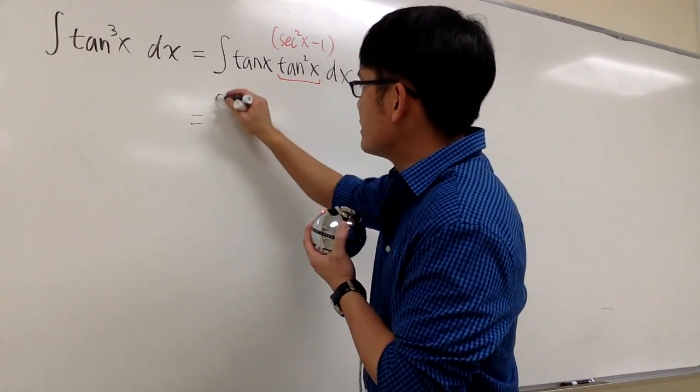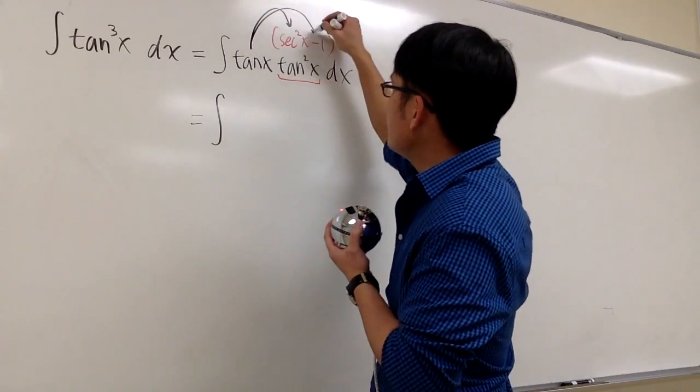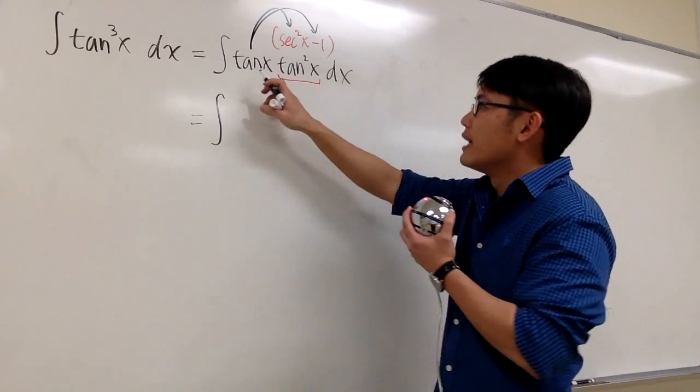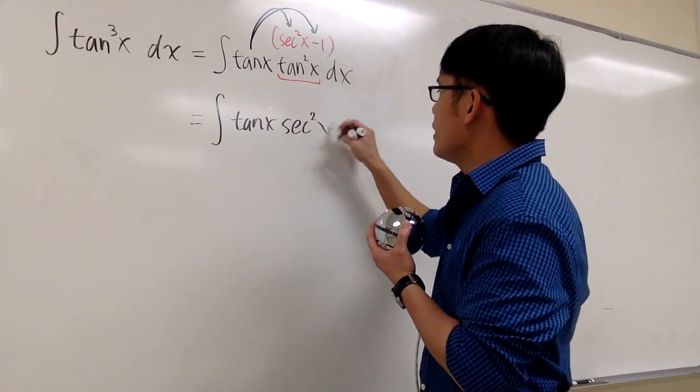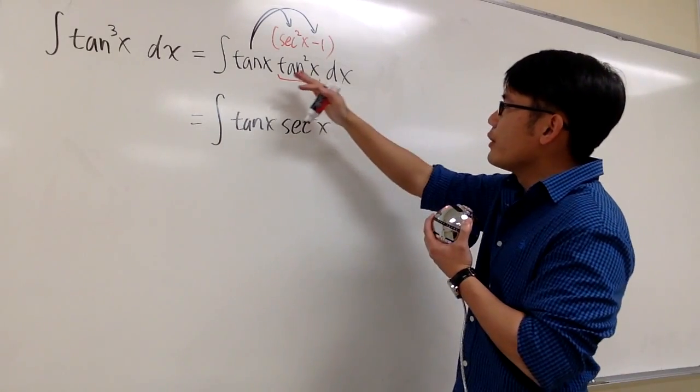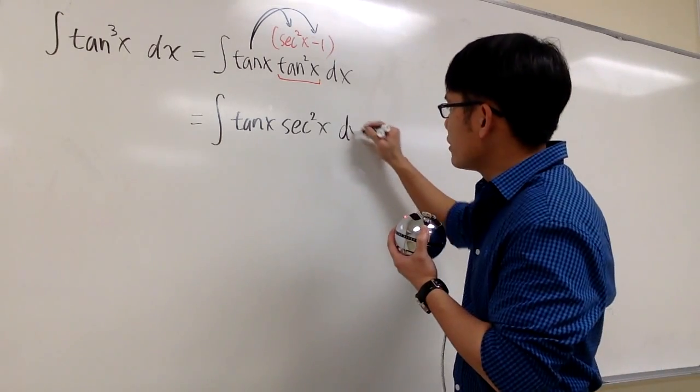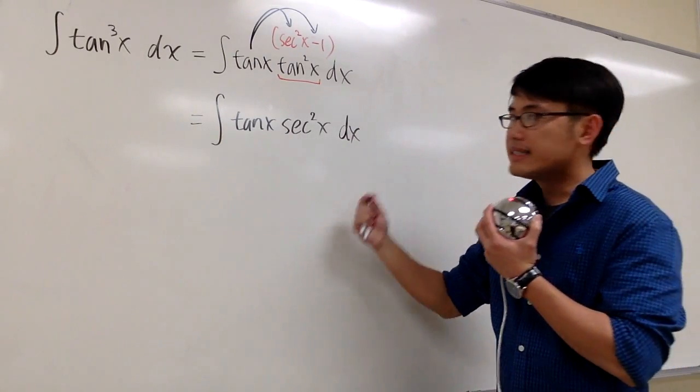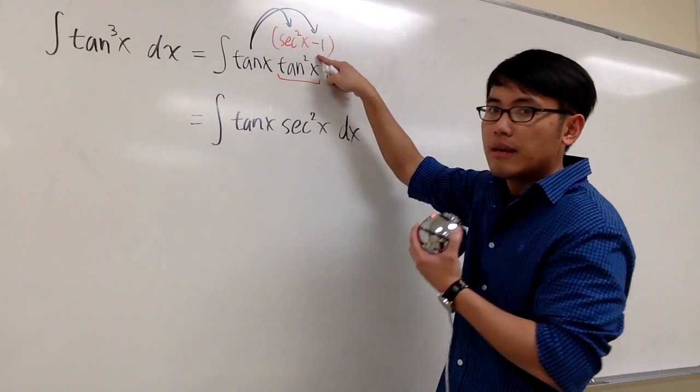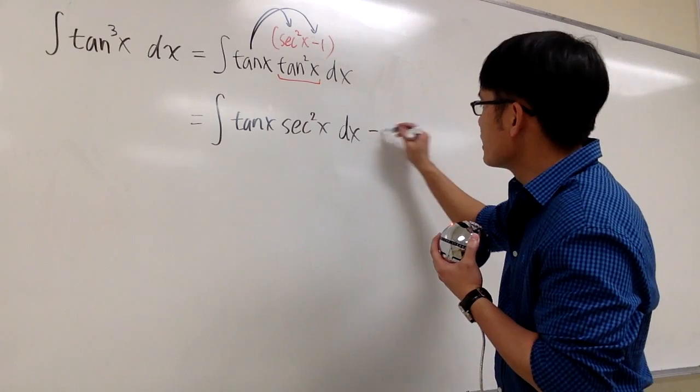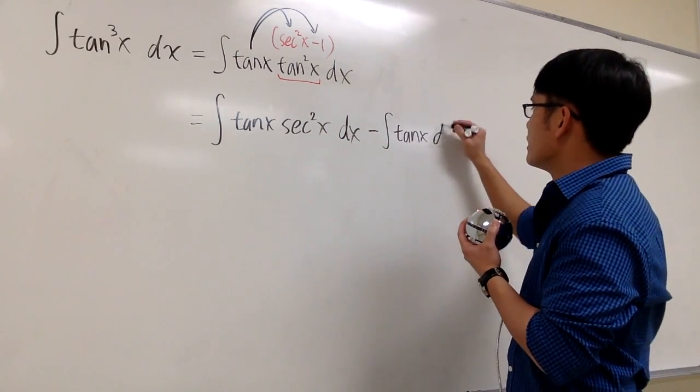Let me just show you, this is the same as saying the integral—I will take the tangent x and then distribute it inside. So for the first part, we are going to get tangent x times secant squared x. And then technically I can close this because the next one is going to be another integral. So let me put on dx right here to close the first integral. Secondly, we still have to take the tangent x, multiply with negative 1, but that's inside of the integral. So we will subtract the integral of tangent x times 1, which is just tangent x dx.